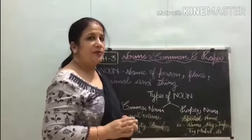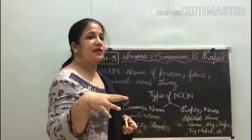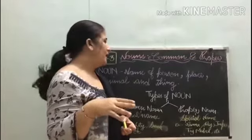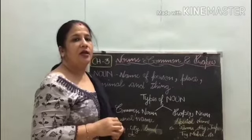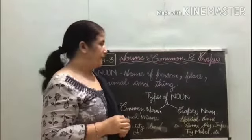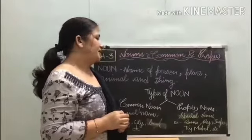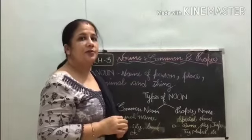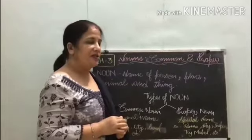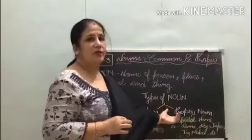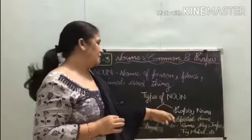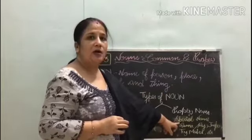Kisi bhi person, place, thing, animals ka naam — common aaye, yaani ki general aaye — usko hum kya bolenge? Common noun bolenge. Or proper noun kya hota hai? A noun with a special name — special name of person, place and thing. Jab special name aata hai, toh usko hum kya kehte hain? Proper noun. Proper noun hamesha capital letter se start hota hai. Jab hum write karenge, toh uska first letter kya hoga? Capital.